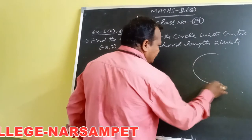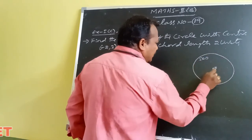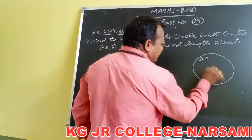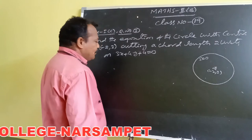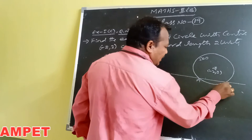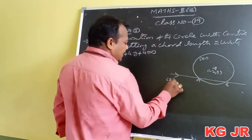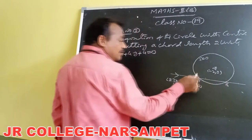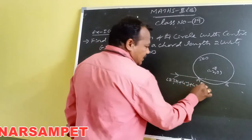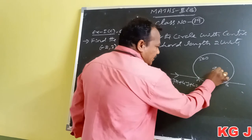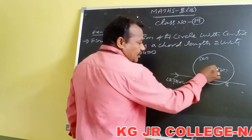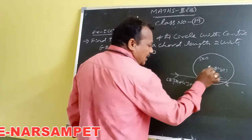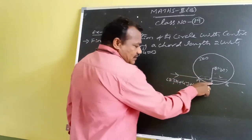This is the rough diagram. The center coordinates are minus 2 comma 3. We consider the center coordinates as x1 comma y1. The line equation is 3x plus 4y plus 4 equals 0. The line cuts the circle at 2 points. The length of the chord AB equals 2 units. Taking the perpendicular drawn from the center upon the chord, that equals p, and PB is half the length of the chord because P is the midpoint of AB.